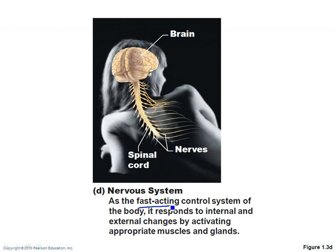Its job is basically to respond to what's going on internally or externally and send the appropriate response. For example, right now it's a little cold in here, and my cold receptors are sending signals to my brain. My brain is sending back a signal to my muscles to shiver so I warm up a little bit.